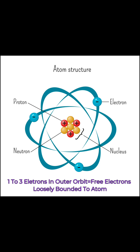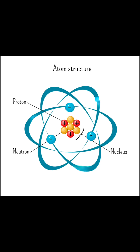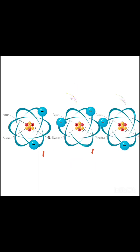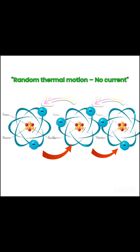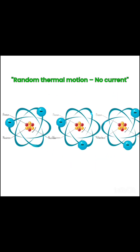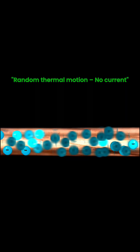In a conductor like copper, the atoms have one, two, three electrons in their outermost orbit. These are called free electrons because they are loosely bounded to the nucleus. These free electrons move in a confused, disordered way because of thermal vibration in the metal atoms. But this motion is balanced in all directions, so there is no net flow of charge.